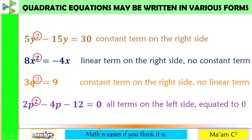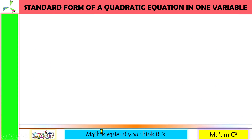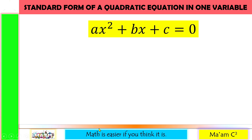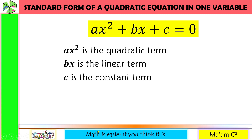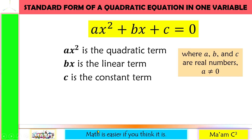Working with a quadratic equation is usually simplified when expressed in standard form. The standard form of a quadratic equation in one variable is expressed as ax squared plus bx plus c equals 0. Ax squared is the quadratic term, bx is the linear term, while c is the constant term, where a, b, and c are all real numbers and a is not equal to 0.